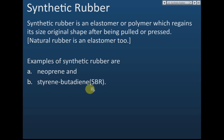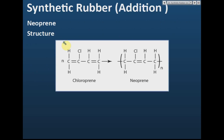Neoprene and styrene-butadiene. For neoprene, the monomer is chloroprene. Chloroprene has two double bonds, and through addition reactions these two double bonds are eliminated, forming a double bond in between. The monomer then joins with another molecule from the side to form neoprene.